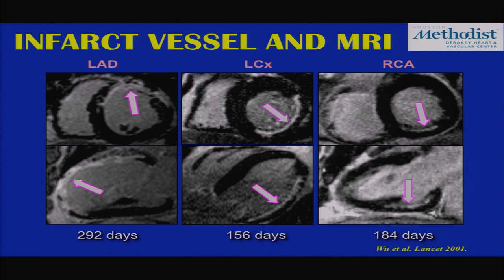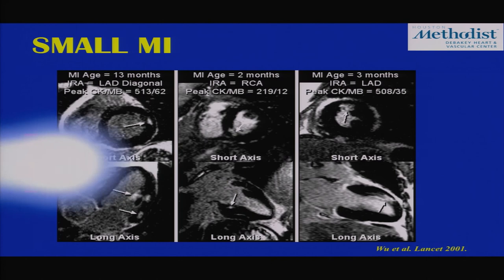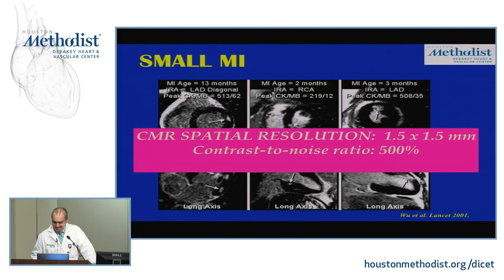As a result of high resolution, even very small infarcts can be identified — for example, a patient with a CK of 513 and CK-MB of only 62, and another with an RCA infarct two months prior with a peak MB rise of only 12, where hyper-enhancement corresponding to that territory is clearly visible. The high contrast-to-noise ratio is also key: signal intensity within the infarct is almost five-fold higher than in normal myocardium, which appears black. Lastly, this can be performed without radiation exposure.